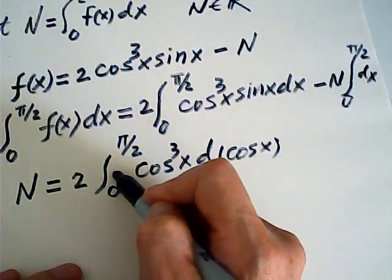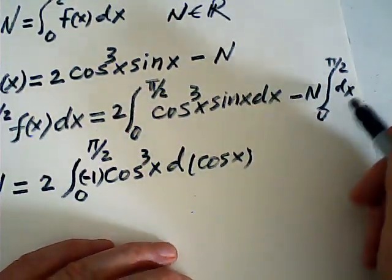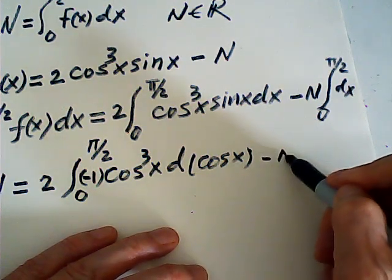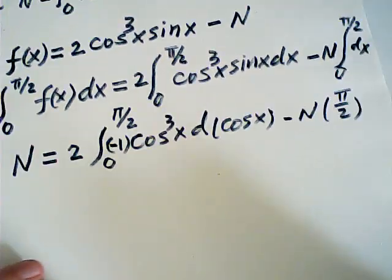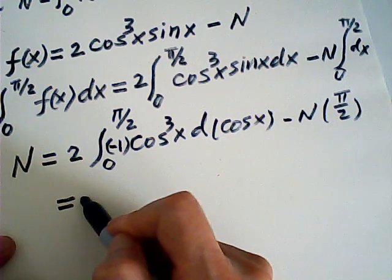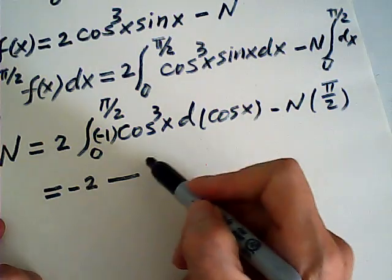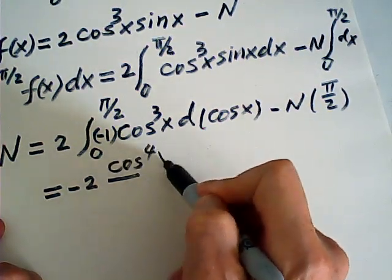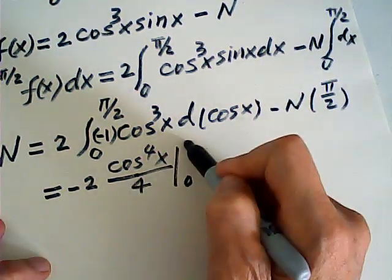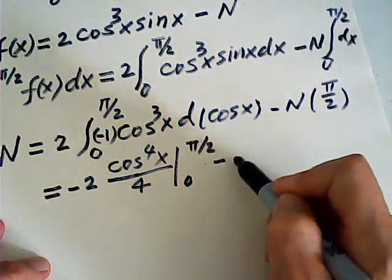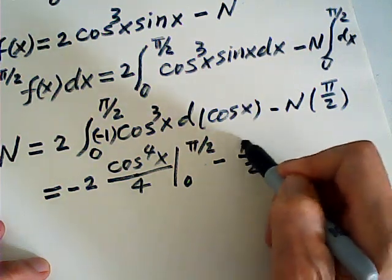And for that one, you multiply by negative 1 because this is a negative sign. And that one is easier. Minus N times half pi. And this one is equal to negative 2.